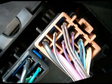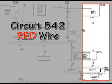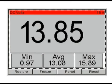Repeated cycling of the switch from low to high and returning to low confirms that these voltages remain constant. The other circuit we want to check is the red wire, which is circuit 542. This wire is power from the control head to the blower motor control module. We confirm that we have 13.85 volts at this wire.